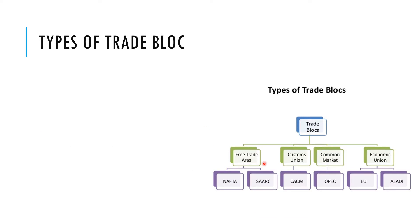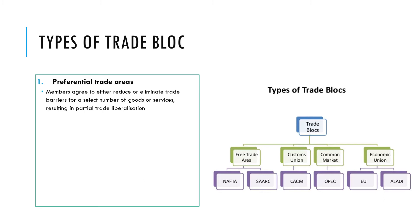There are lots of different types of trade bloc and we need to be aware of five different types. The first is a preferential trade area, where countries agree to eliminate trade barriers — for example tariffs — on particular goods and services, not all goods and services but maybe a couple of key items. For example, China might remove tariffs on Japan's bikes and Japan might in return remove tariffs on China's clothes, creating a preferential trade area.